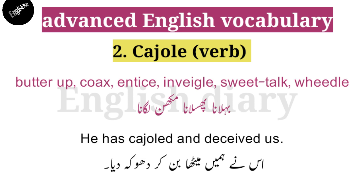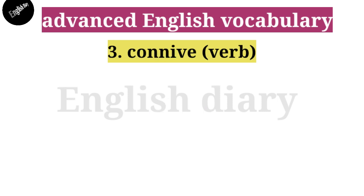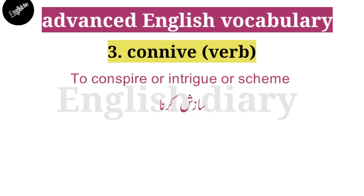The next verb is 'connive.' Connive is a verb and its meaning is saajish karna, scheme karna — that is to conspire, entreat, or scheme against someone.